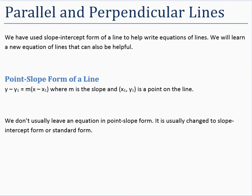What we're going to be doing today is writing equations of lines parallel and perpendicular to a given line. But first we're going to learn a new type of form of a line. So far we've talked about standard form, we've also talked about slope-intercept form, and now we're going to talk about point-slope form.